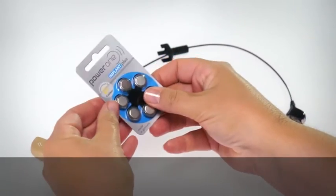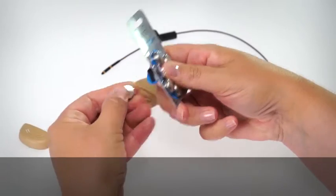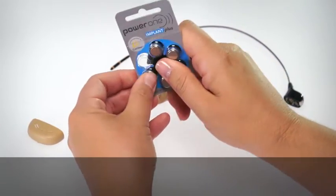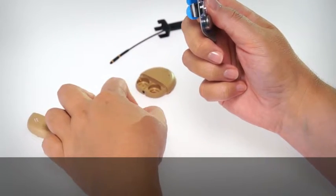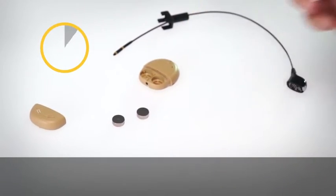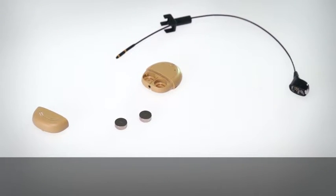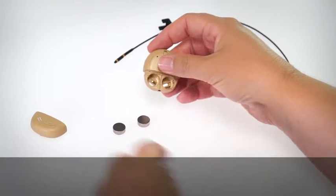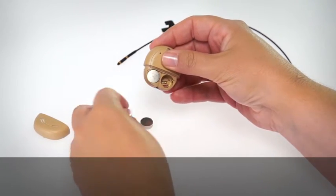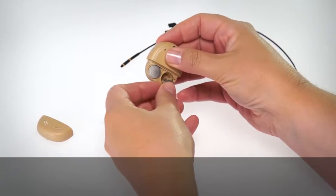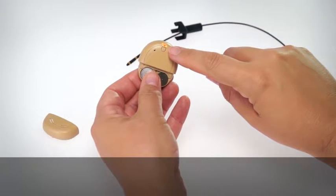Remove the new batteries from the packet and let them stand for a few seconds. Insert the batteries into the holder with the flat side facing up. The Kanso will automatically turn on.